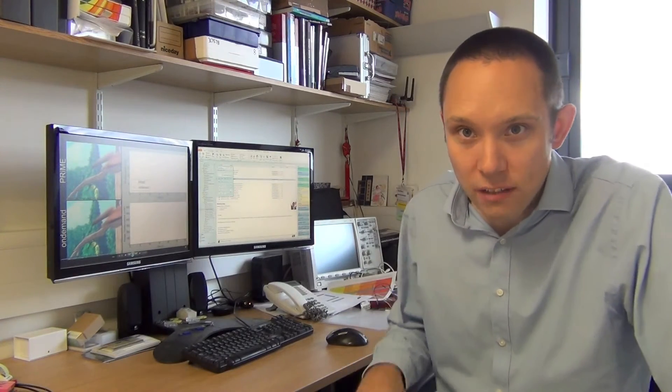So let's take a look in a bit more detail at how that energy saving was obtained. So on your screen here you have the two videos on the left-hand side. The bottom left is using the standard Linux approach, that's using the on-demand governor, and top left is using the approach that we've developed in Prime.